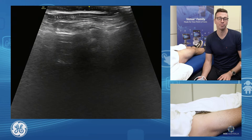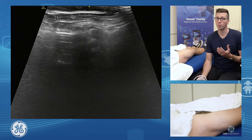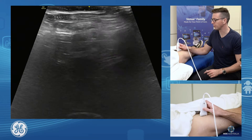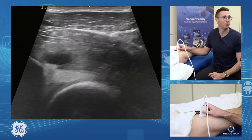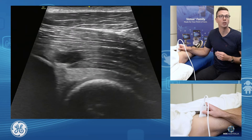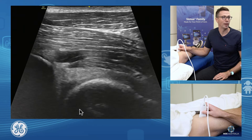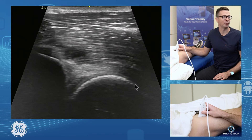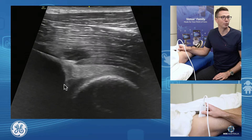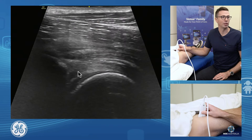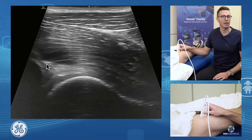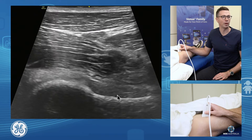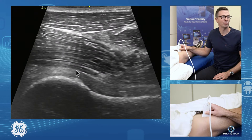Anterior Hip Joint Assessment. We're going to assess the hip joint proper itself. We'll find the anterior hip, put our probe straight on the front, and have a look. We'll identify our femoral head, the anterior aspect of our acetabulum, and the front triangular shape of the anterior labrum. Then we'll scan down and assess the femoral head-neck junction, and have a look at our hip joint capsule itself.